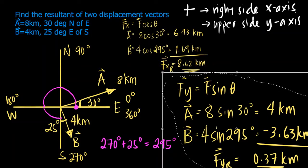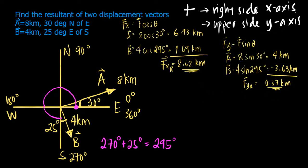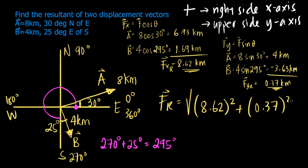So now that we know the x-component and y-component resultants, we can solve for the magnitude of that resultant. So let's do a little Pythagorean theorem. The x is 8.62 squared plus the y which is 0.37 squared, then square root. That's 8.63 kilometers. So 8.63 kilometers is the resultant of our vectors' magnitude.